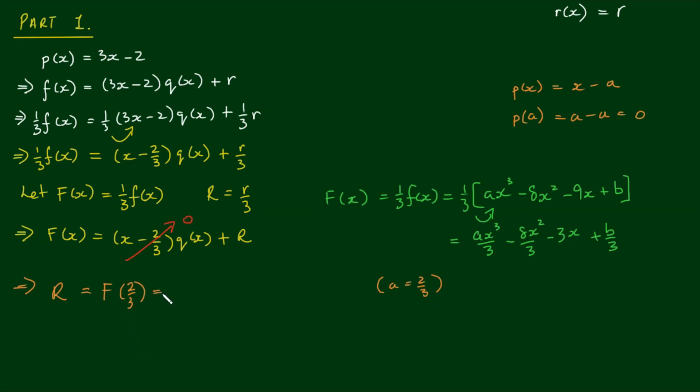So with that, we have from here, r is equal to a on 3 by 2 thirds cubed minus 8 on 3 by 2 thirds squared minus 3 by 2 thirds plus b on 3. Let's move this note over a little bit for clarity. And because p(x) equals 3x minus 2 is perfectly divisible into f(x), this remainder little r is equal to 0.